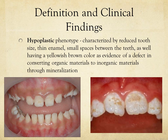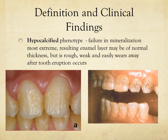The hypoplastic phenotype features small spaces between teeth and a yellowish-brown color, evidencing a defect in converting organic materials into inorganic materials. You can see in the pictures the hypermineralized enamel, some brown spots, and loss of interproximal contact.